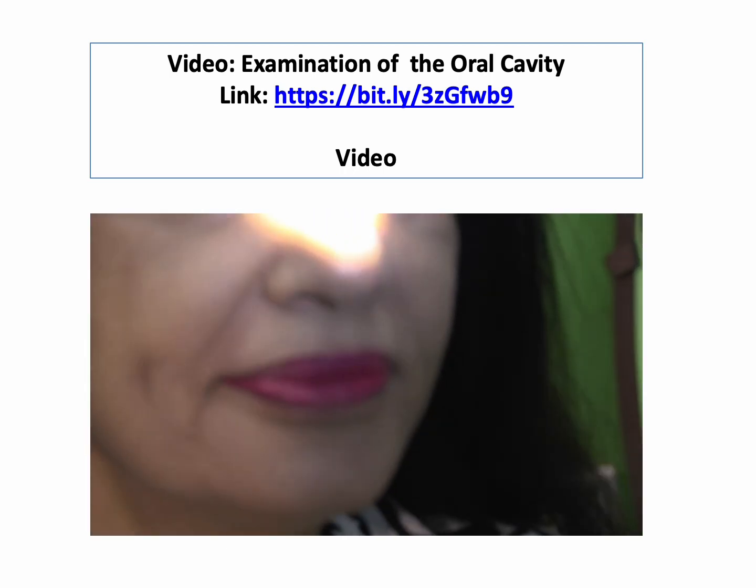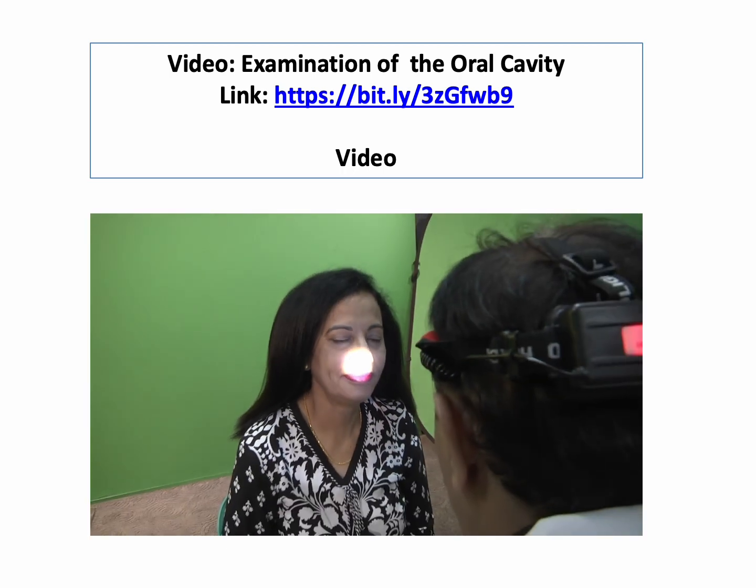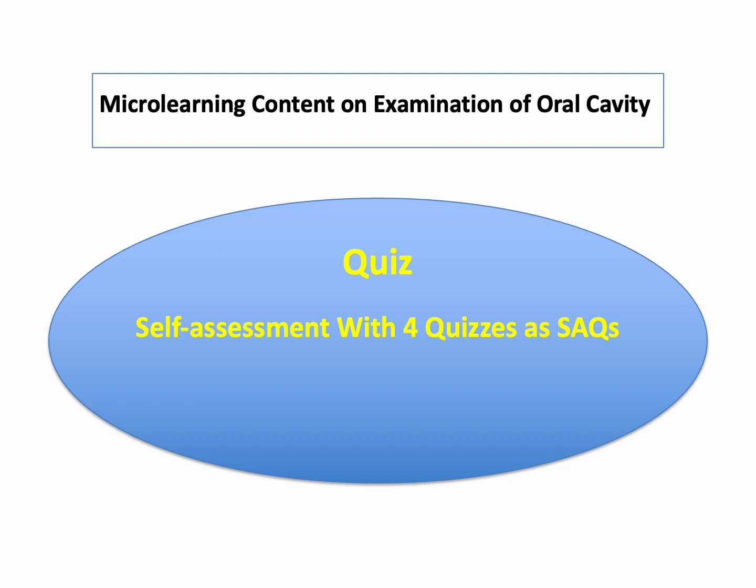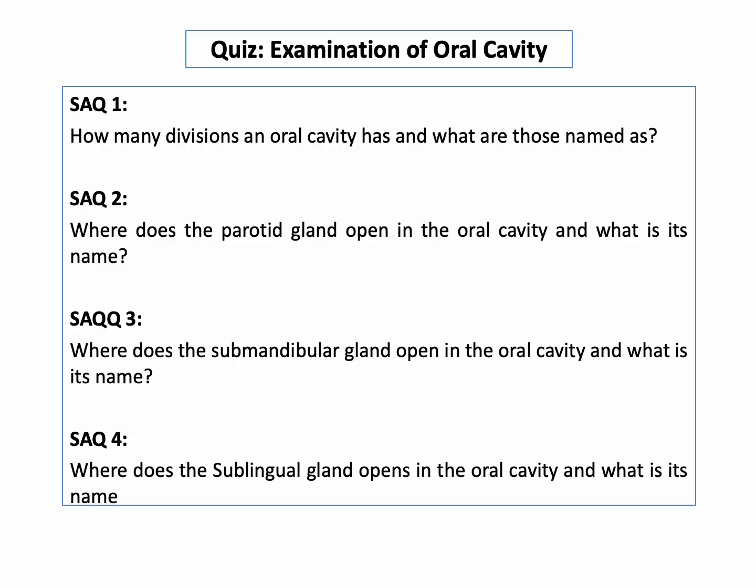That completes the examination. Now it is time for self-assessment with four SIQs. SIQ one: how many divisions does the oral cavity have and what are they named? SIQ two: where does the parotid gland open in the oral cavity and what is its name? SIQ three: where does the submandibular gland open and what is its name? SIQ four: where does the sublingual gland open and what is its name?